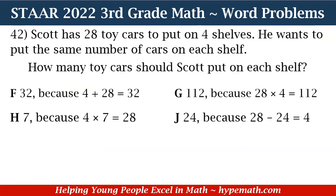Let's move to question number 42. Scott has 28 toy cars to put on four shelves. He wants to put the same number of cars on each shelf. How many toy cars should Scott put on each shelf? Is it F, 32 because 4 plus 28 equals 32; G, 112 because 28 times 4 equals 112; H, 7 because 4 times 7 equals 28; or J, 24 because 28 minus 24 equals 4?